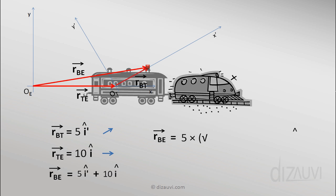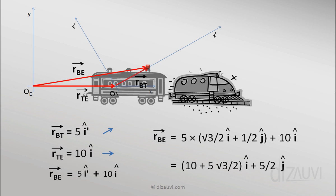We substitute the value of i' cap found earlier to get the position vector of the box in the Earth's frame in terms of i and j cap. Till now, we saw the case when neither the train nor the box is moving. In the next sections, let's take up those cases and see if there is any relationship between the velocity vectors of the body as seen from different reference frames.